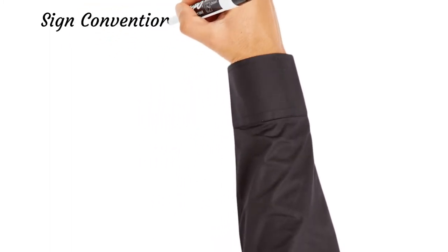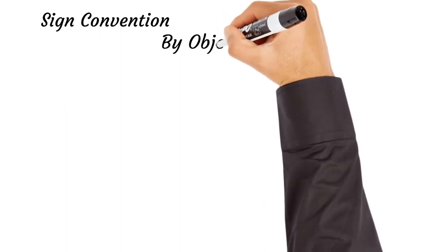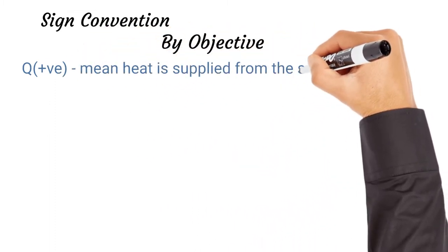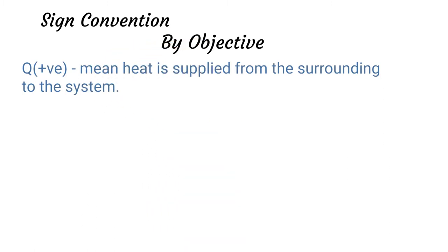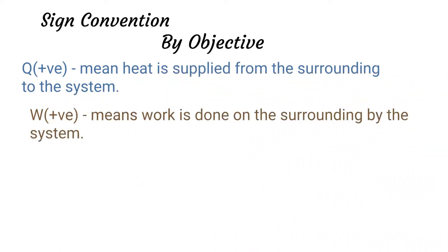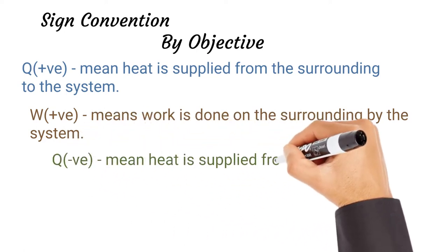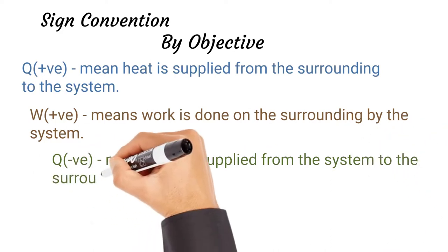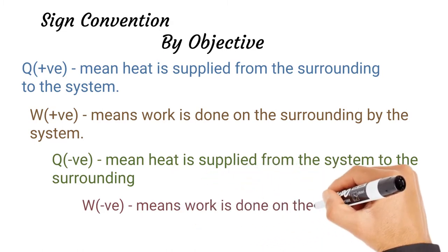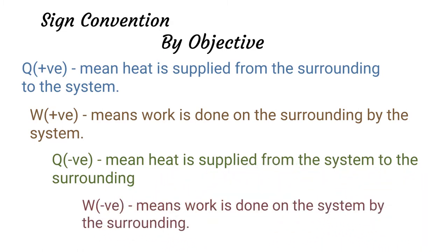First, we need to remind ourselves of the sign conventions. We have 'by objective' and 'by directive'; we are using 'by objective' in our calculations. A positive Q means heat is supplied from the surrounding to the system. A positive work means work is done on the surrounding by the system. A negative Q means heat is supplied from the system to the surrounding. A negative work means work is done on the system by the surrounding.